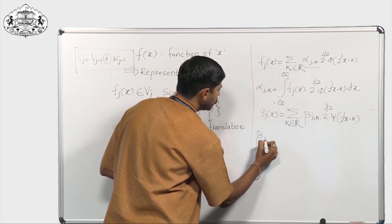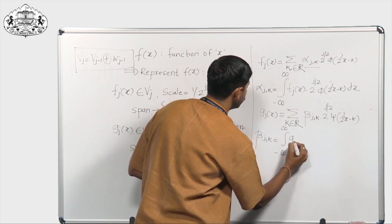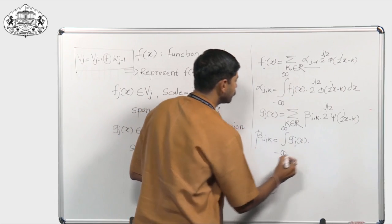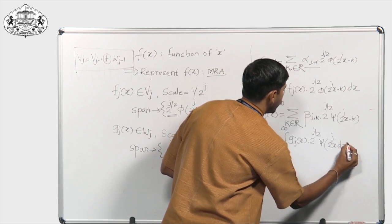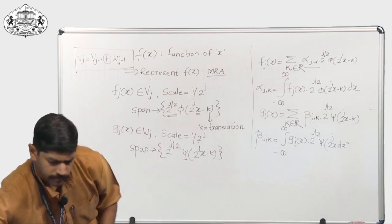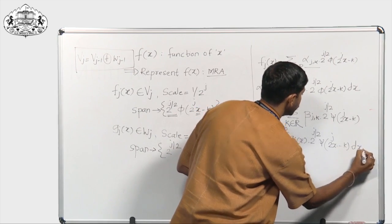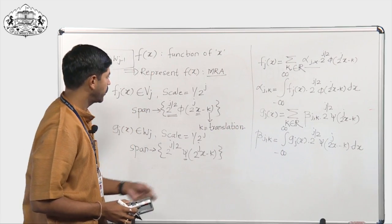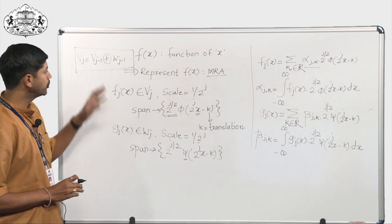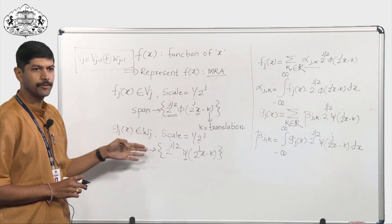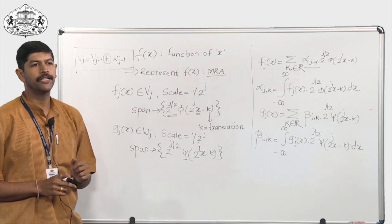The beta values can be captured using a similar integral formula: beta_jk equals the integral of g_j of x times 2 to the power j by 2 times psi of (2^j x minus k) dx. That is pretty much the entire framework — a function represented in different laddered subspaces — and that together gives us the essence of multi-resolution analysis.